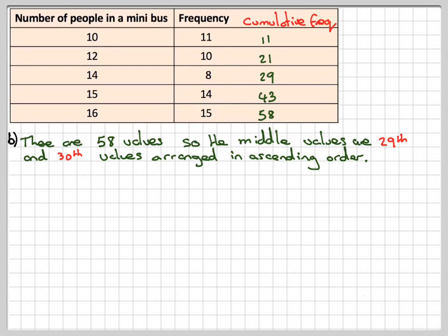Now the 29th value is this one here, and the 30th value is going to be the first one here. So that's going to be 14 plus 15, divided by 2, which is going to be 14.5.